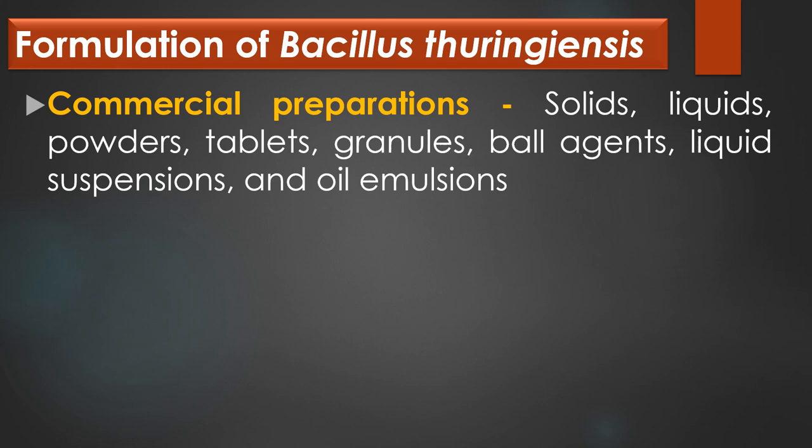Formulation of Bacillus thuringiensis: commercial preparations of Bacillus thuringiensis come in various forms such as solids, liquids, powders, tablets, granules, bait agents, liquid suspensions and oil emulsions.